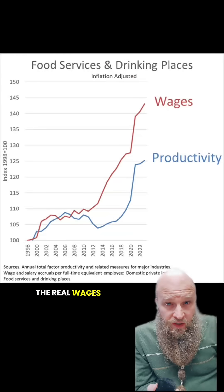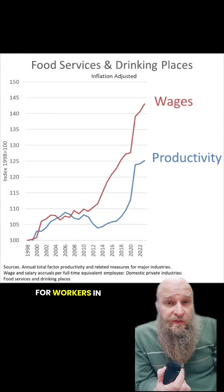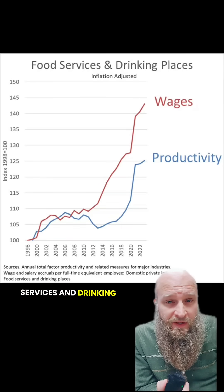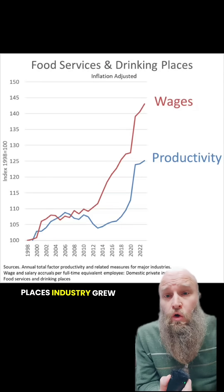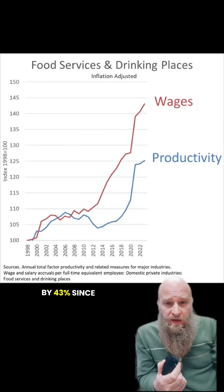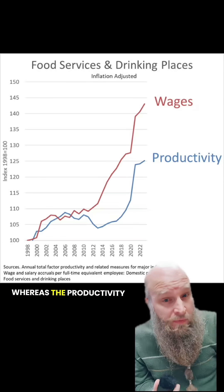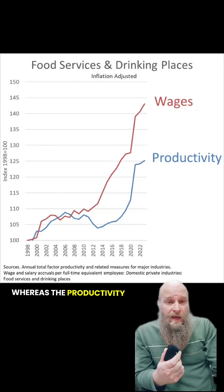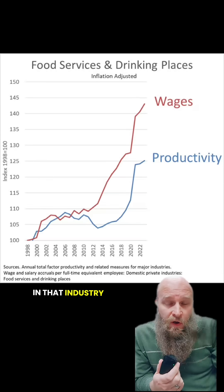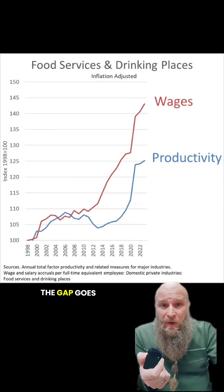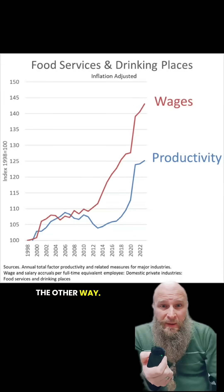Let me show you a figure that's going to blow your mind. The real wages for workers in the food services and drinking places industry grew by 43% since 1998, whereas the productivity in that industry only grew by 25%. The gap goes the other way.